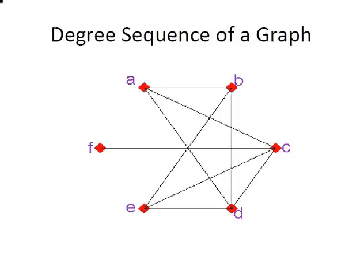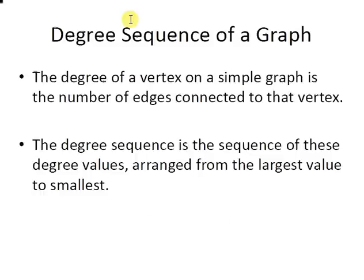So the degree sequence - the degree of a vertex on a simple graph is the number of edges connected to that vertex. The degree sequence is the sequence of these degree values arranged from the largest to the smallest.